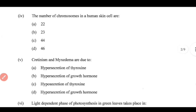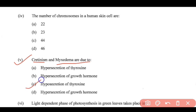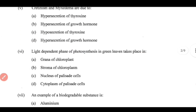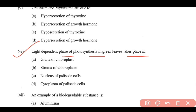Question 5: Cretinism and myxedema are due to hyposecretion of thyroxine, so option C is correct. Question 6: The light-dependent phase of photosynthesis in green leaves takes place in — this occurs during the day time, and the correct option is option A, that is the grana of the chloroplast.